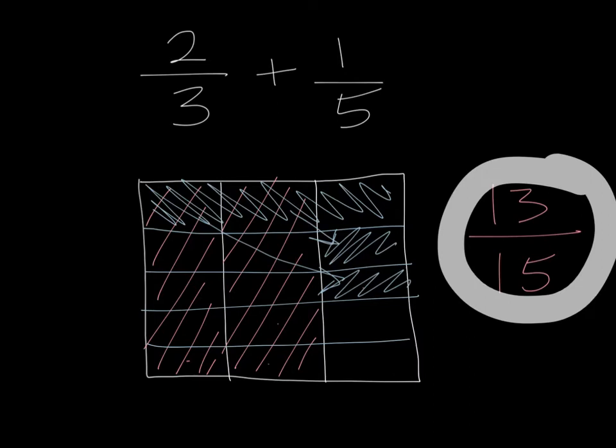Now let's try this using the common denominator method. So 2/3 plus 1/5. We can say, let's look and say 3 and 5. Let's get some multiples so we can find the lowest one.